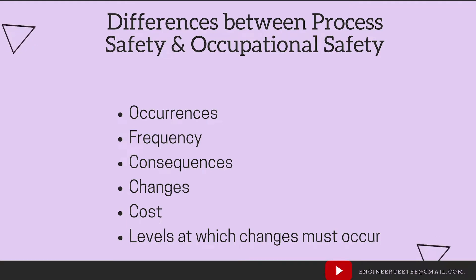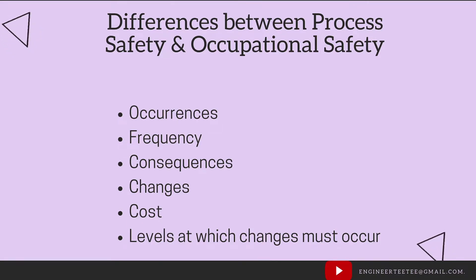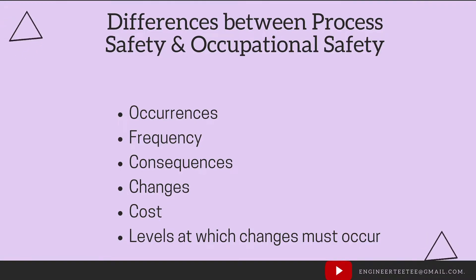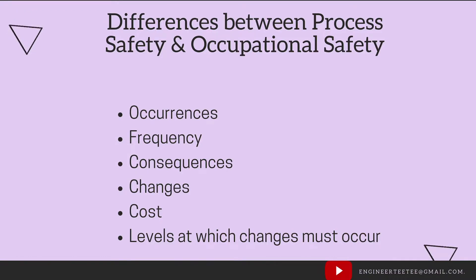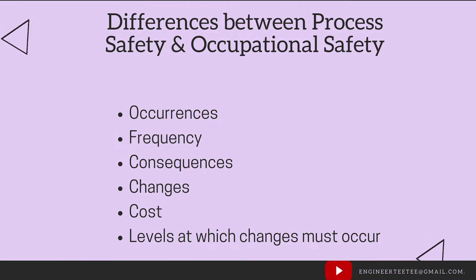Now to the differences between process safety and occupational safety. The first is that process safety includes the prevention of unintentional releases of chemicals, energy, or other hazardous materials, whilst occupational safety refers to the classic health and safety normally associated with the prevention of trips, slips, and falls.